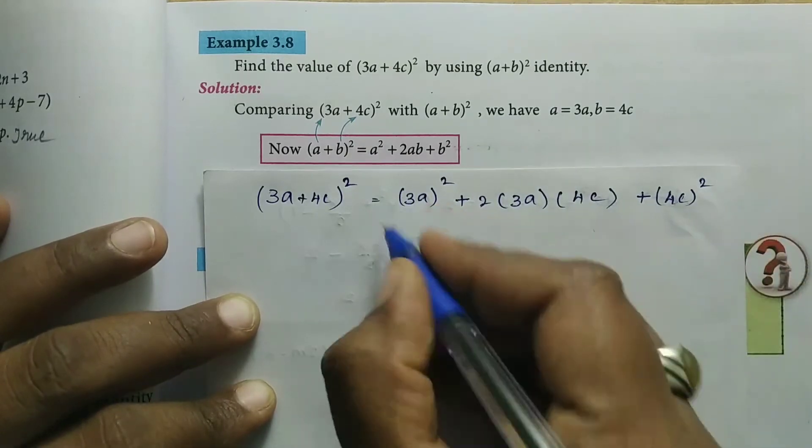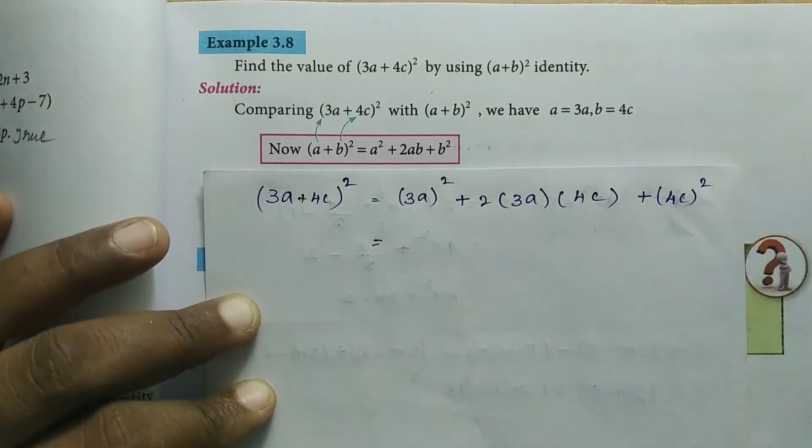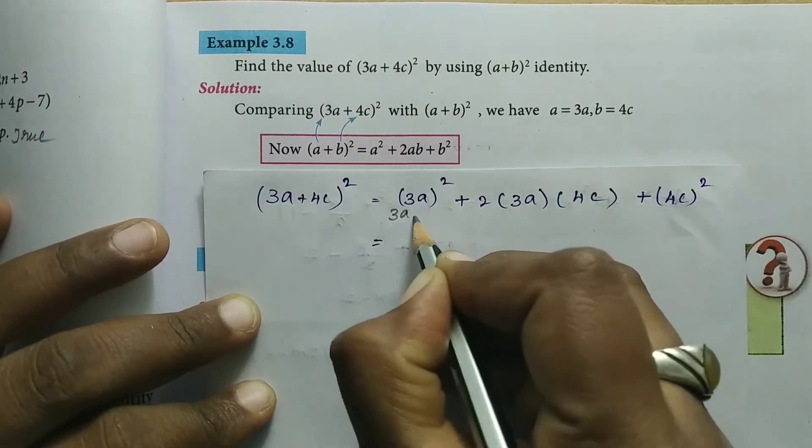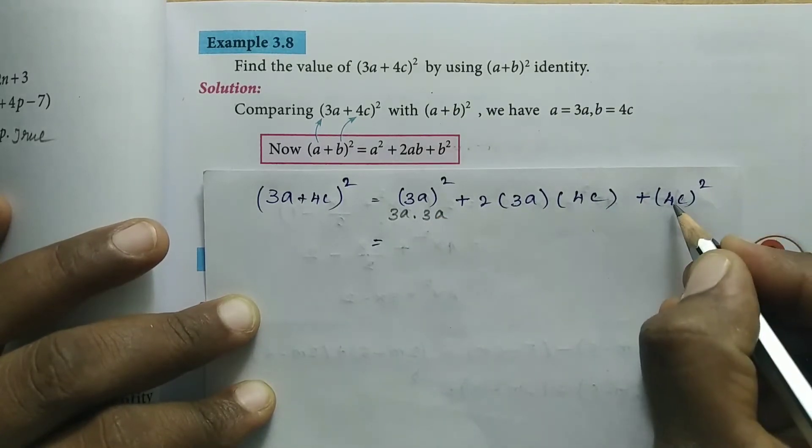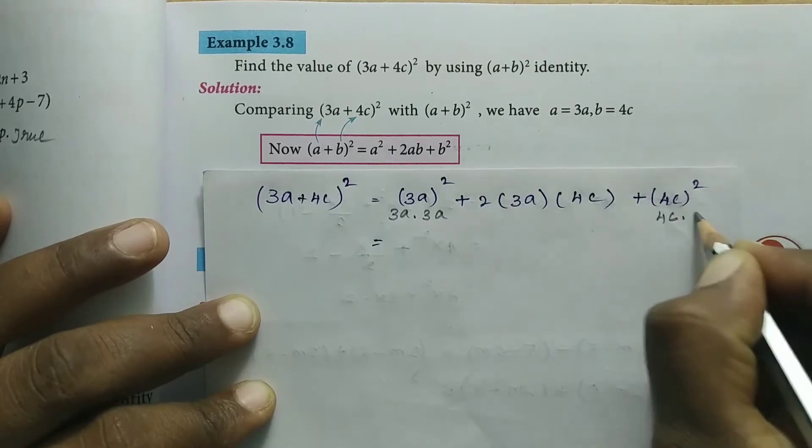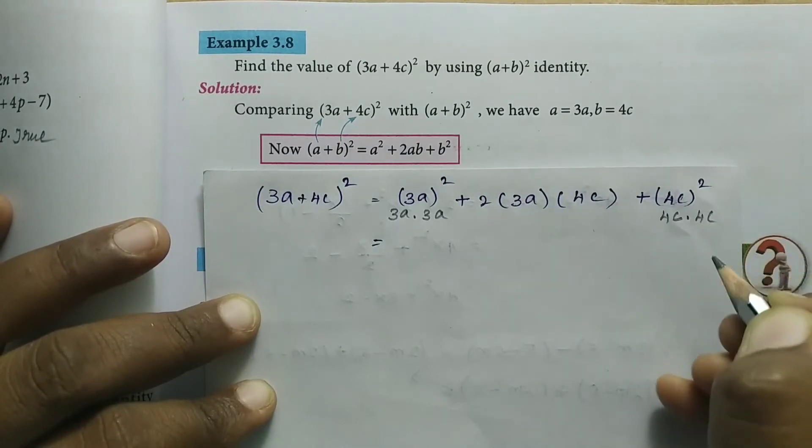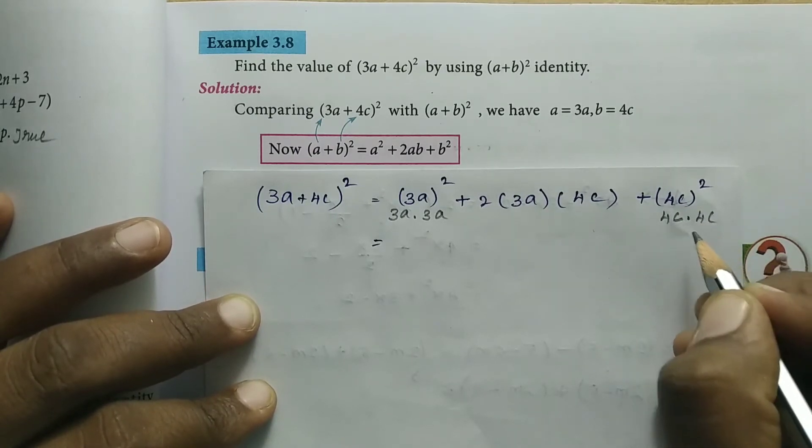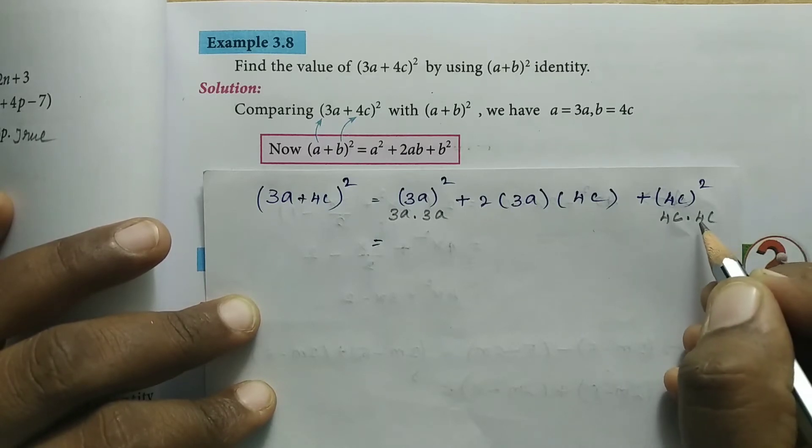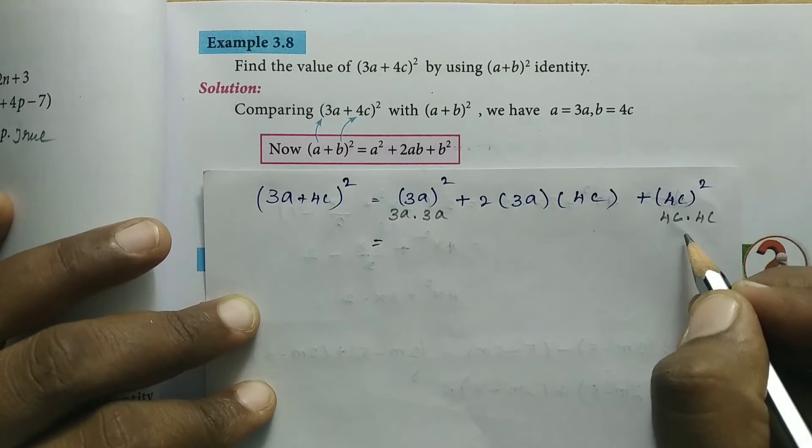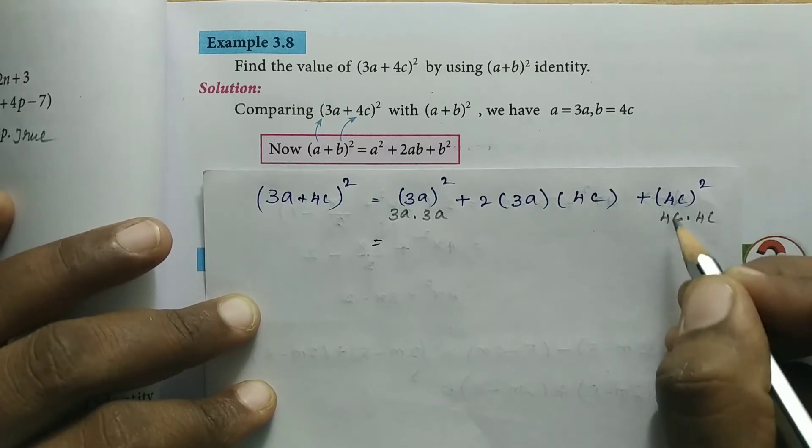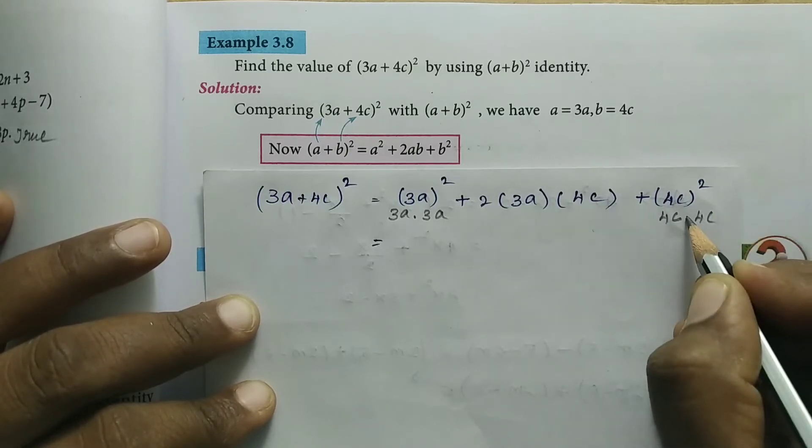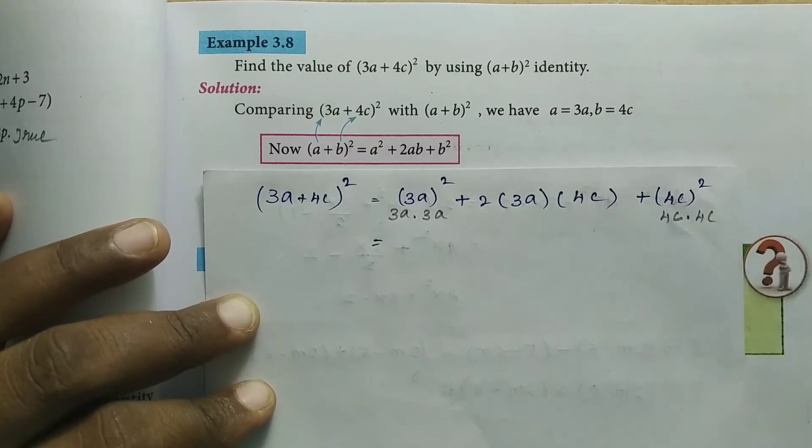For 4c × 4c, this is the multiplication sign. In algebraic expressions, the multiplication symbol × can be confused with the variable x, so we use a dot symbol for multiplication.